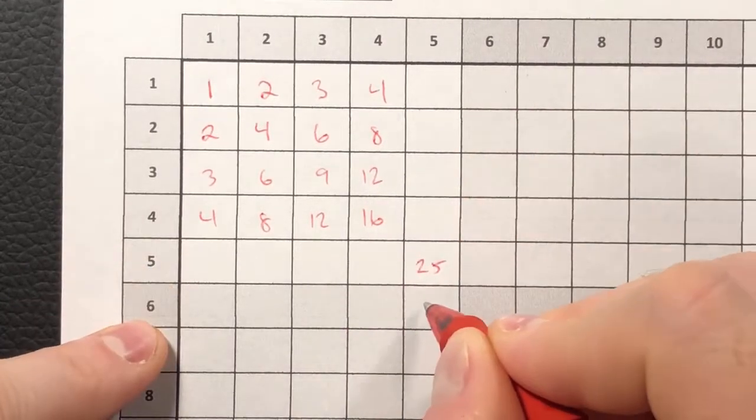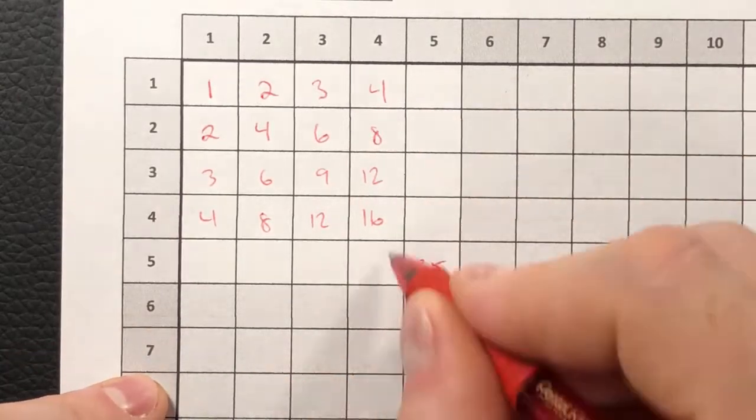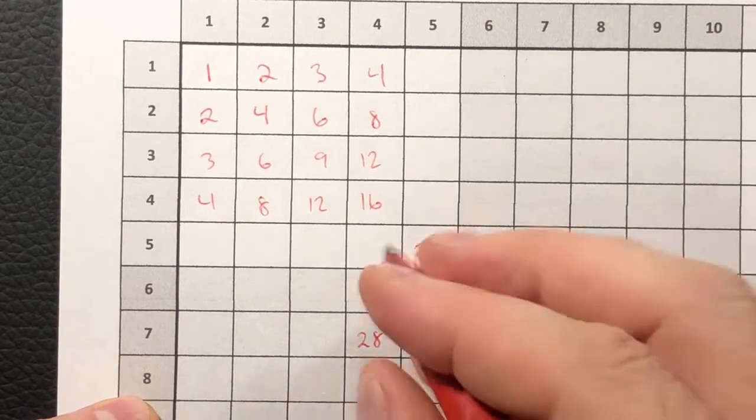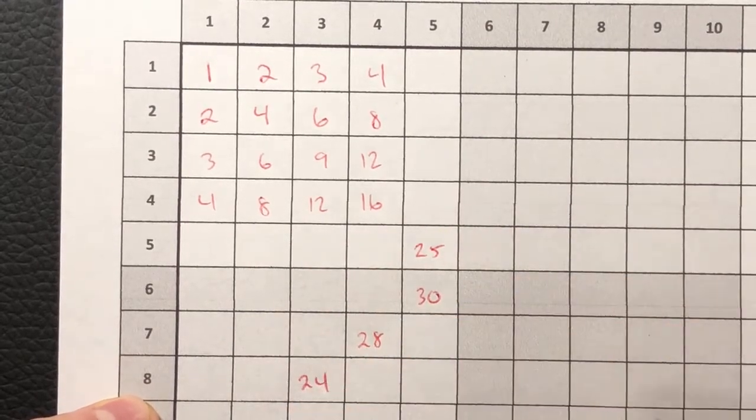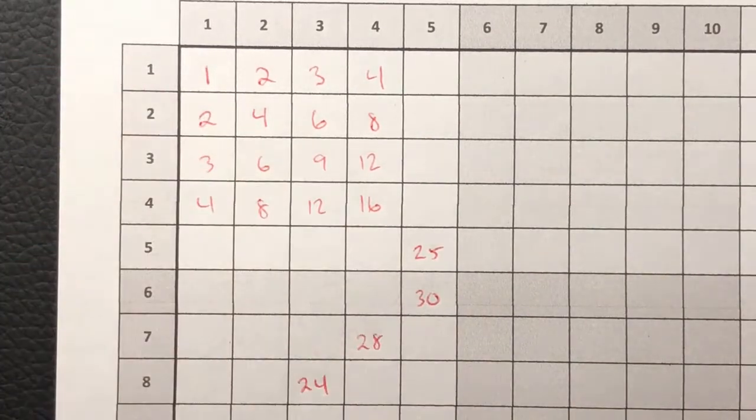If I go down, this is 6 by 5. If I move over here, this is 7 by 4. This is, as we move down here, this is 8 by 3. And you're just filling in what the product is of those two numbers multiplied together.